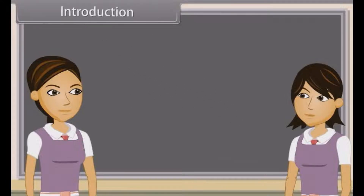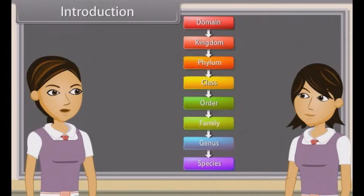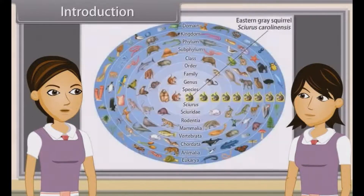Biological classification, or scientific classification in biology, is a method by which biologists group and categorize organisms by biological type, such as genus or species. Modern biological classification has its roots in the work of Carolus Linnaeus, who grouped species according to shared physical characteristics. These groupings have since been revised to improve consistency with the Darwinian principle of common descent.